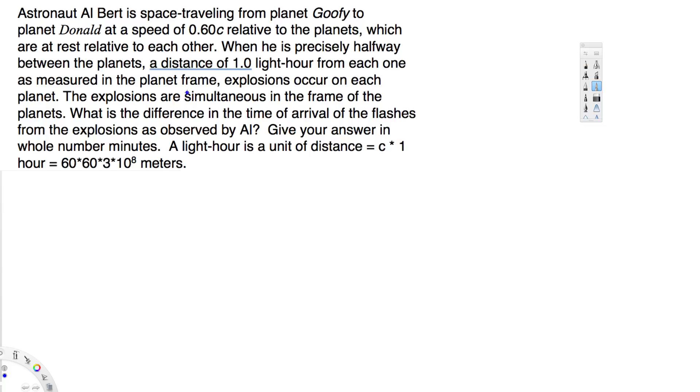As measured in the planet frame, explosions occur on each planet. The explosions are simultaneous in the frame of the planets. What is the difference in the time of arrival of the flashes from the explosions as observed by Al? Give your answer in whole number minutes.